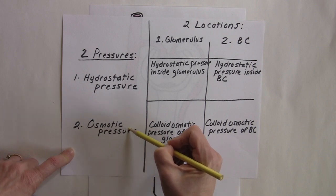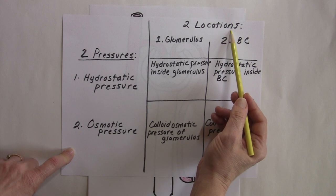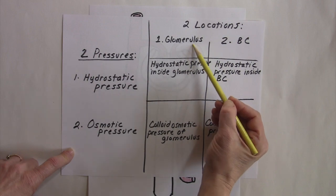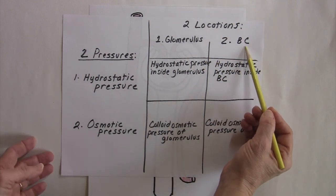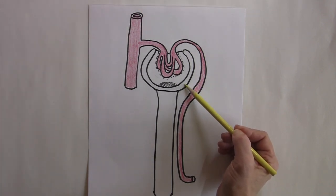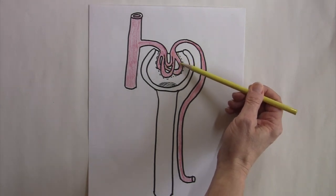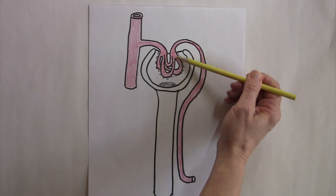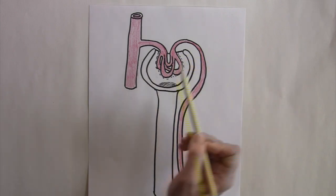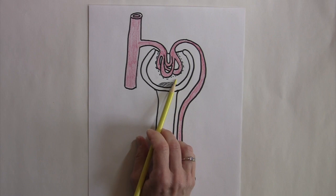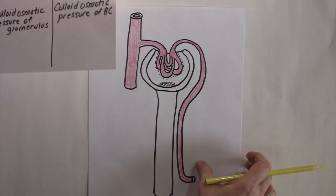Since filtration occurs between the blood and the kidney, there are two locations to consider. We have to look at both the hydrostatic and osmotic pressure inside the glomerulus, and also inside Bowman's capsule. So the net filtration pressure is determined by four factors: hydrostatic pressure in the blood, osmotic pressure in the blood, hydrostatic pressure in Bowman's capsule, and osmotic pressure in Bowman's capsule.